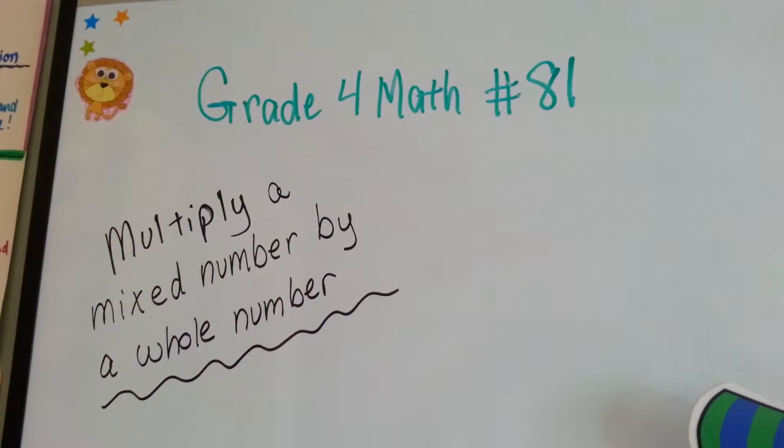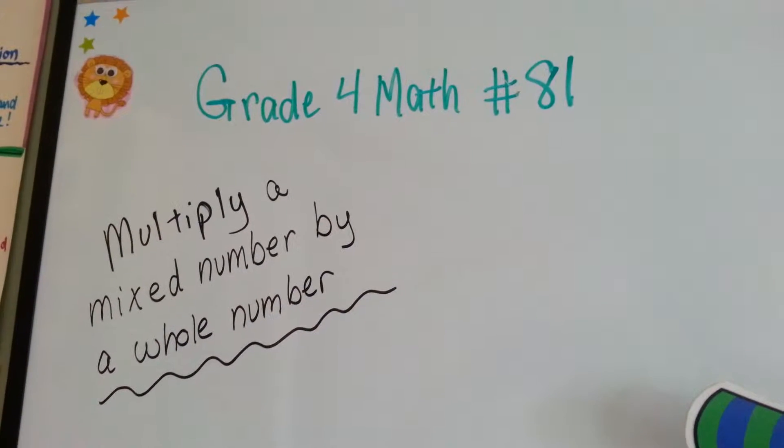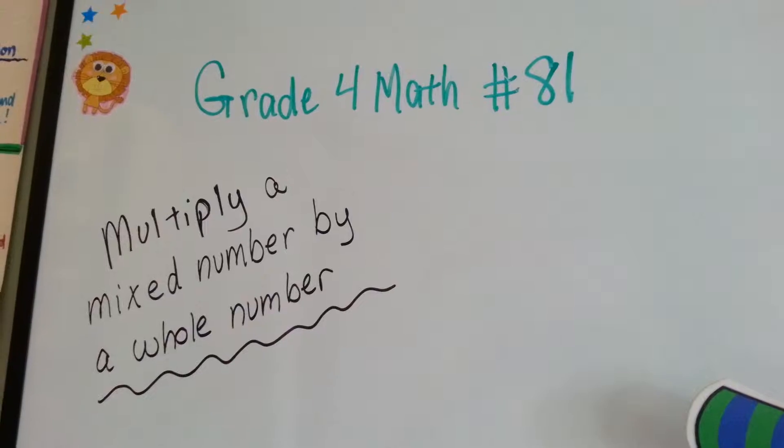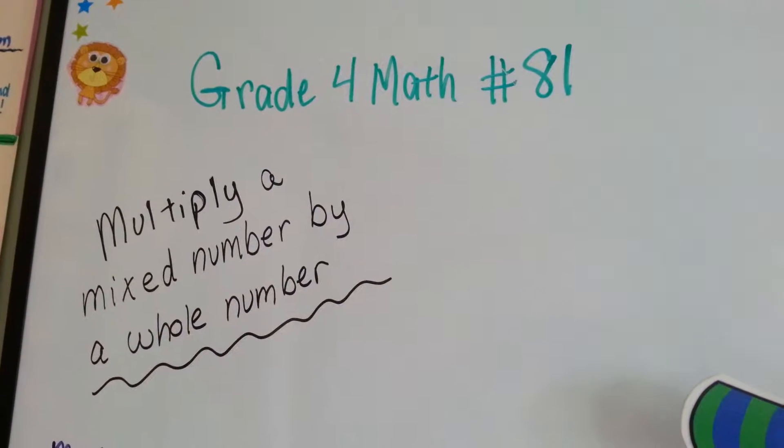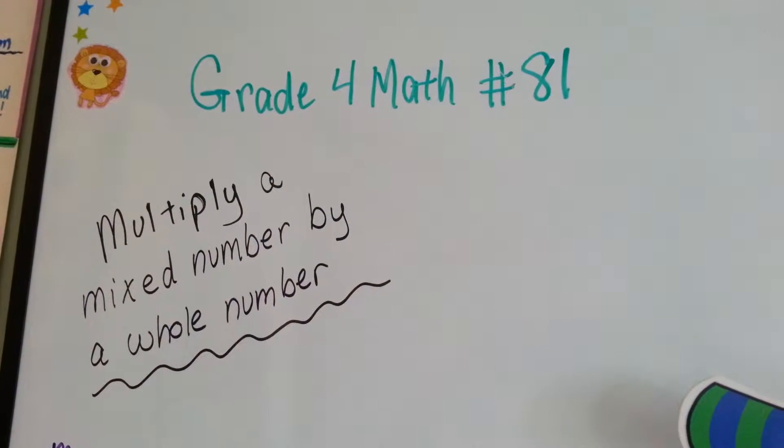Grade 4 math, number 81: multiply a mixed number by a whole number.